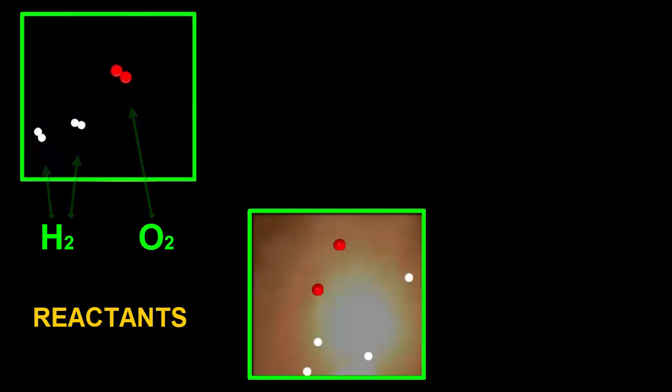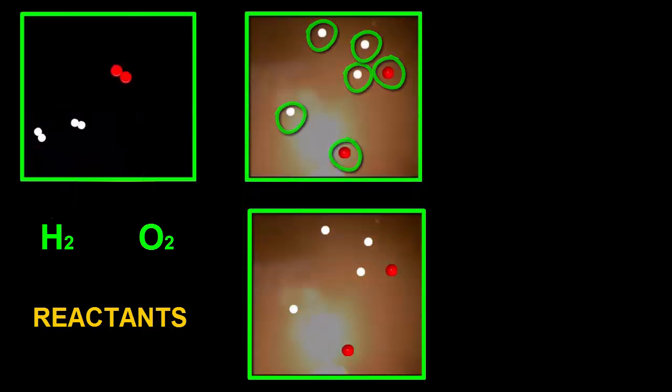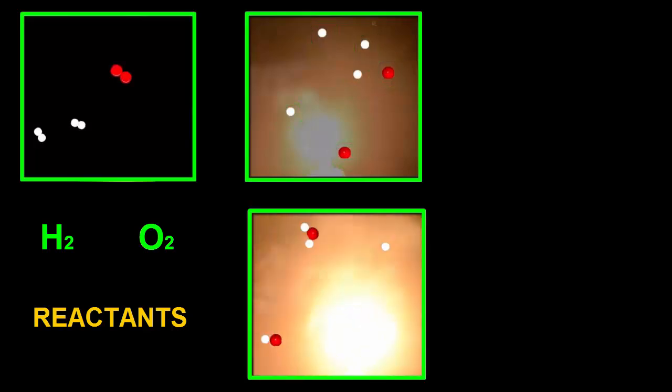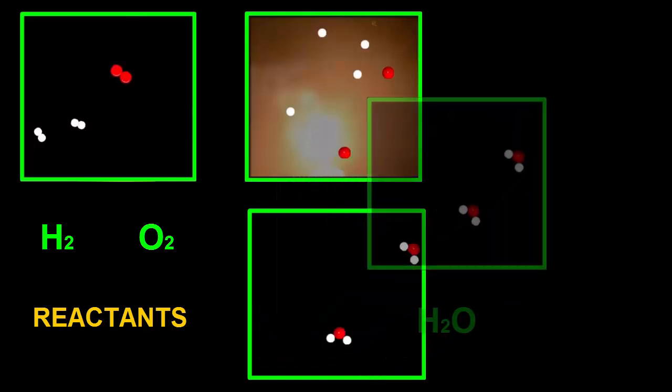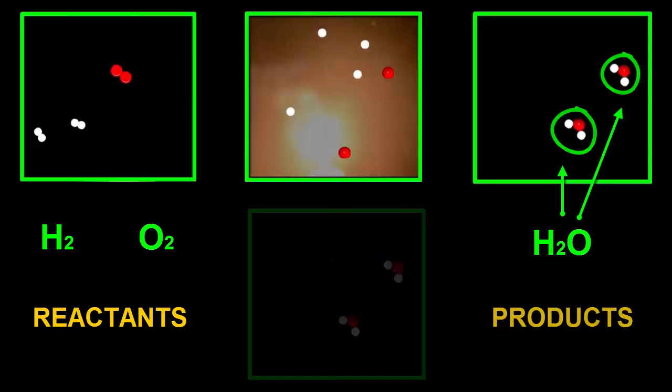When the flame busted them apart, there were four separate hydrogen and two separate oxygen atoms. Then each oxygen atom joined with two hydrogen atoms to make two H2O molecules, which are called the products of the reaction.